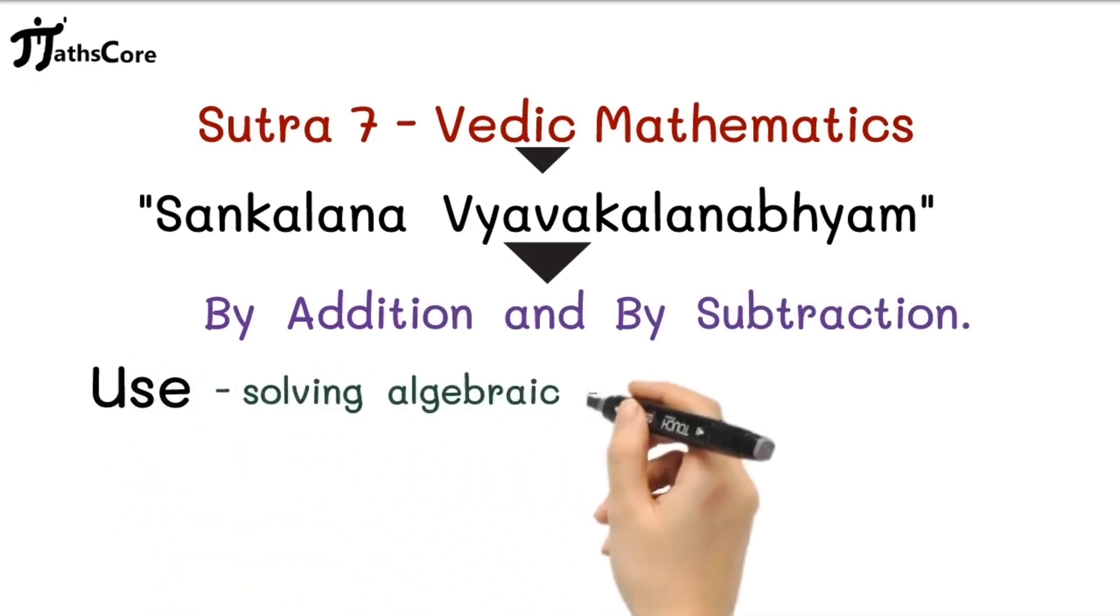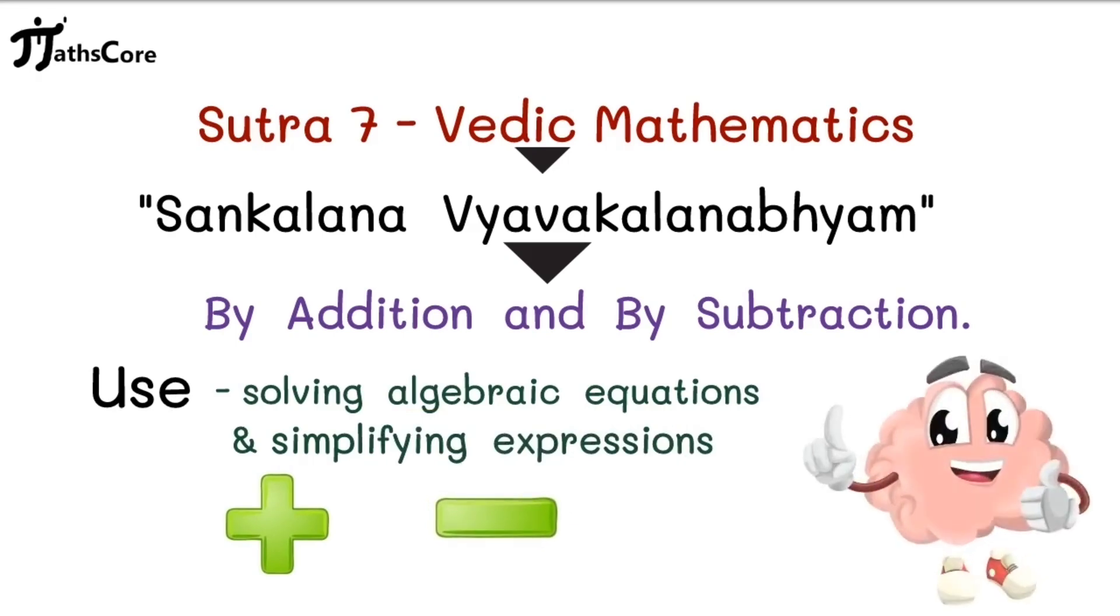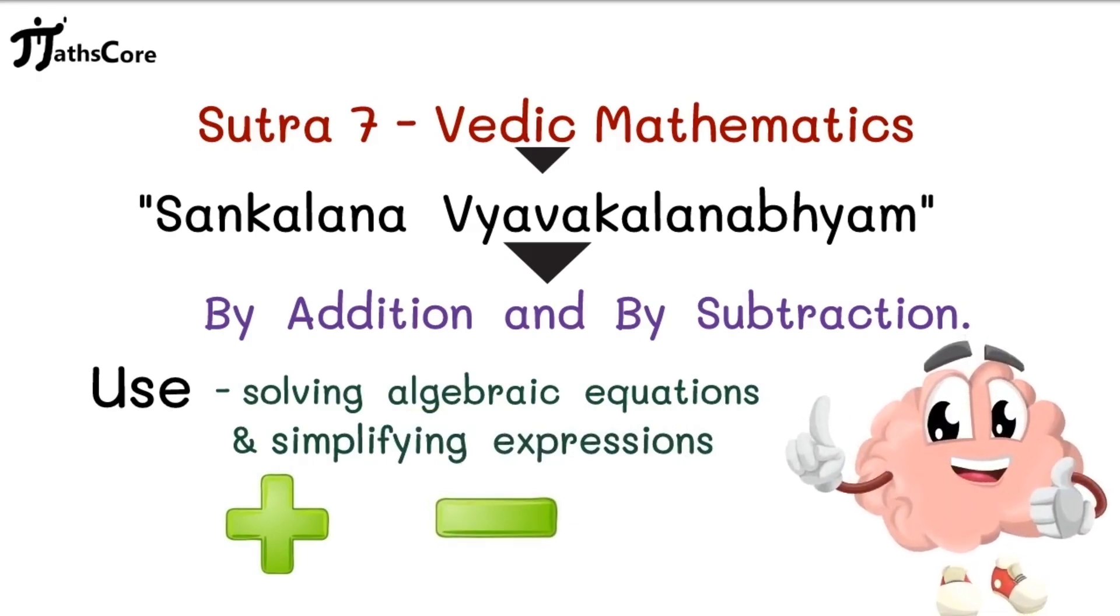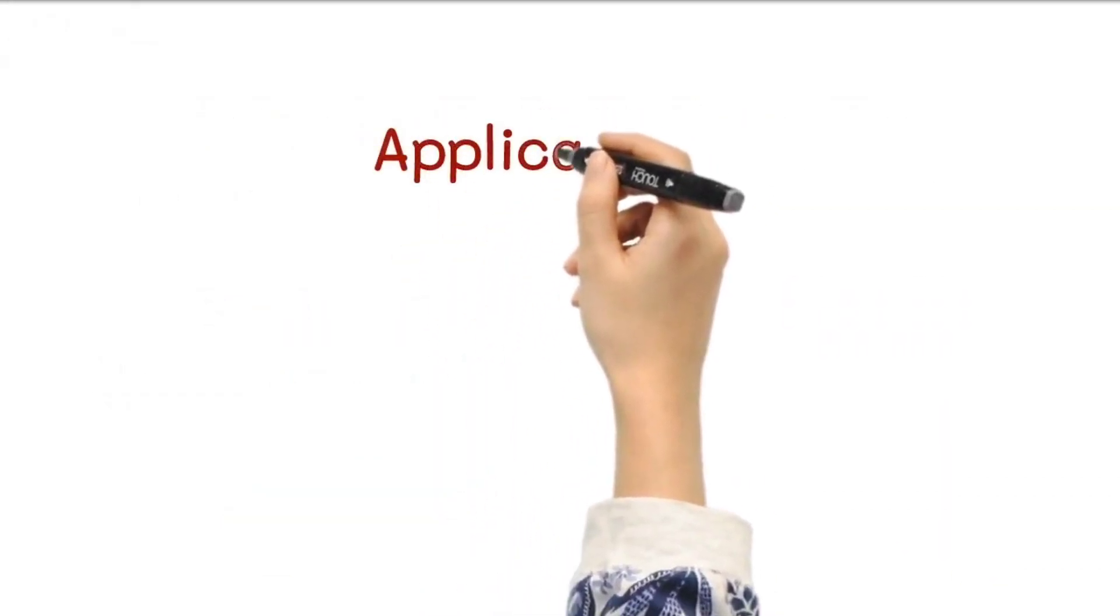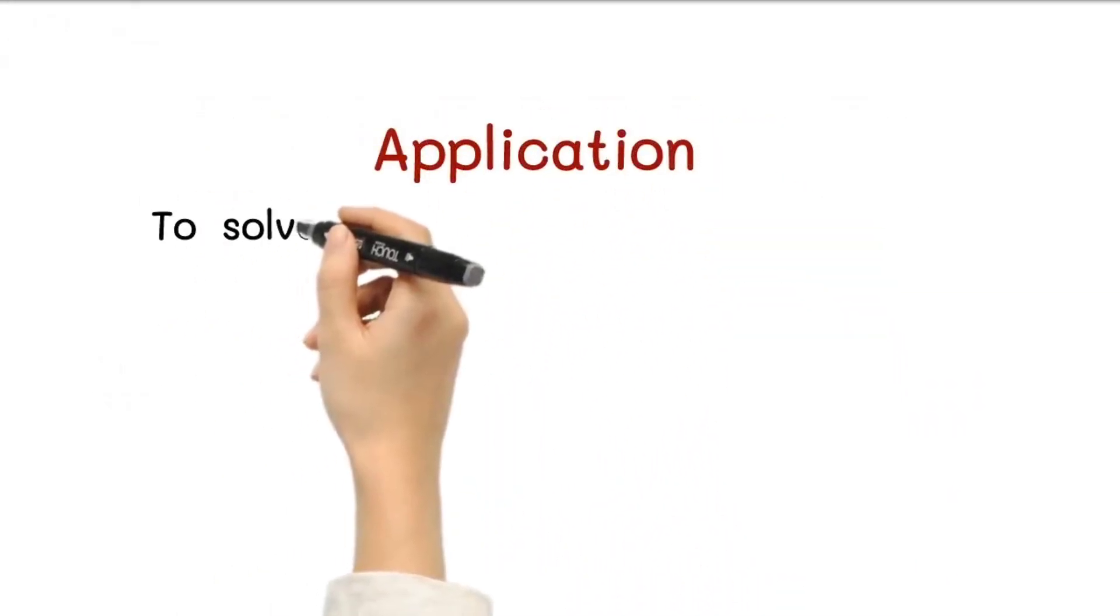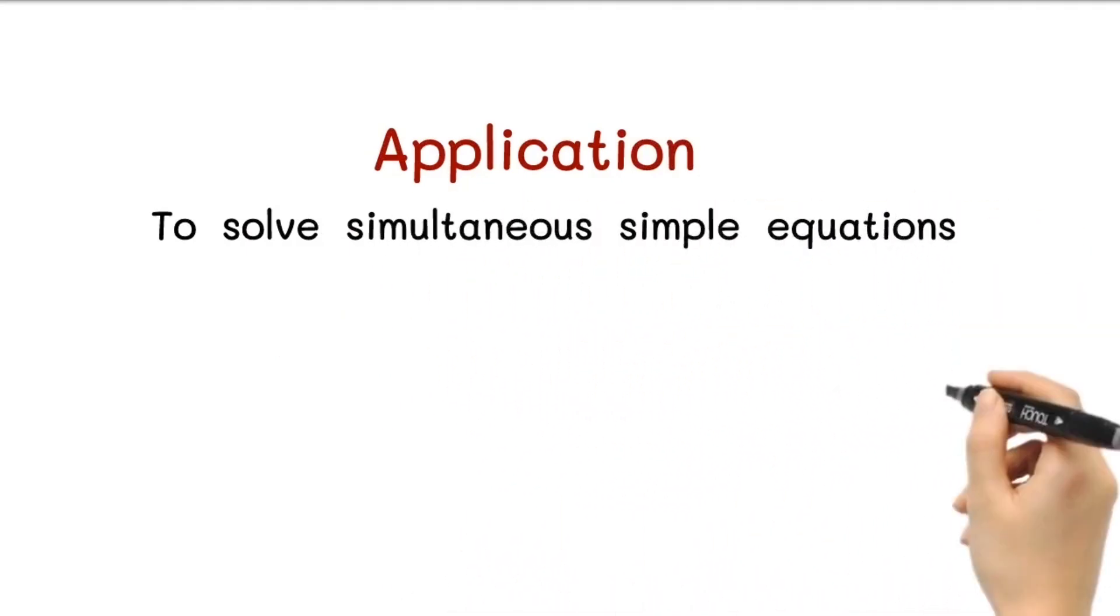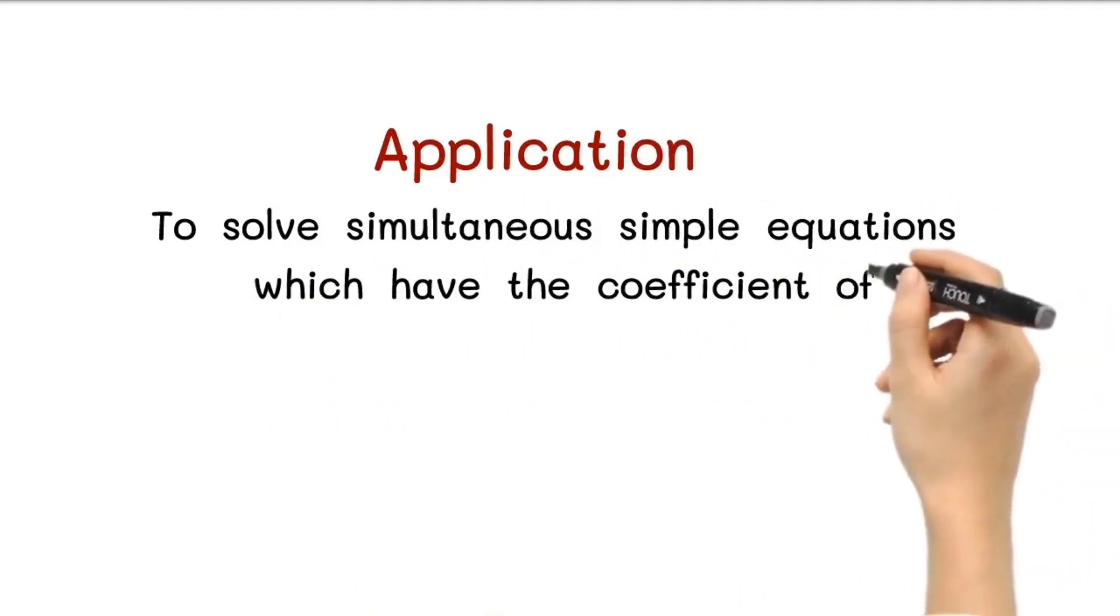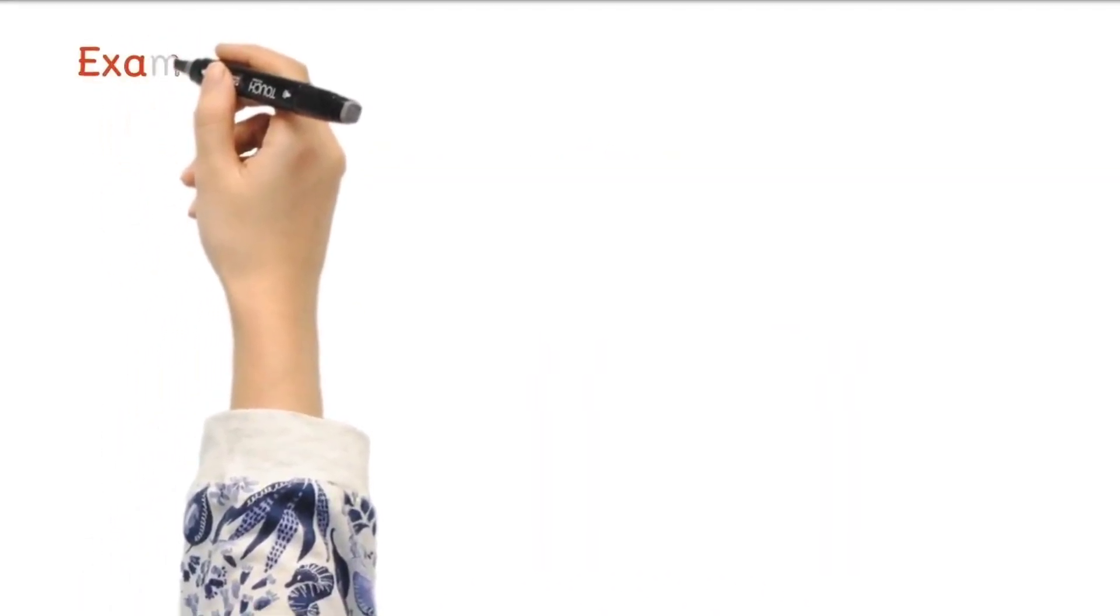for solving algebraic equations and simplifying expressions by utilizing addition and subtraction techniques. Here is a detailed explanation of the sutra along with examples. Applications of Vedic Math Sutra 7: It is used to solve simultaneous simple equations which have the coefficients of the variables interchanged. Let's take an example.